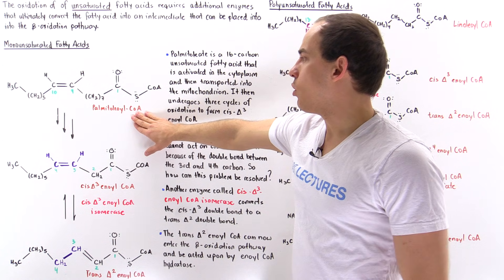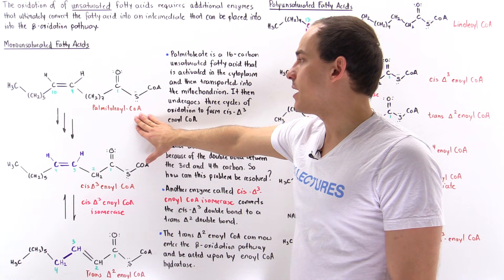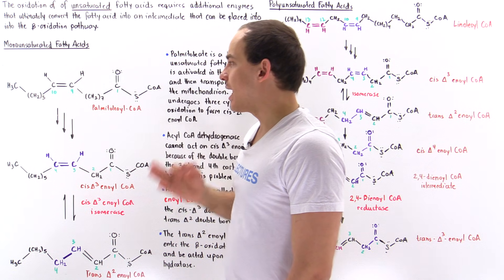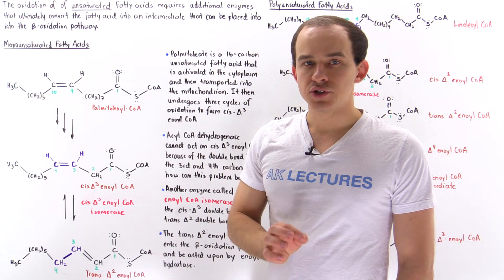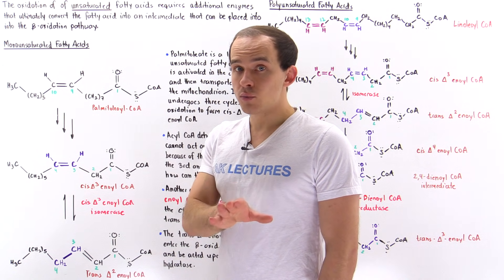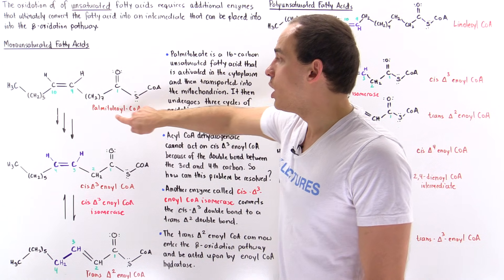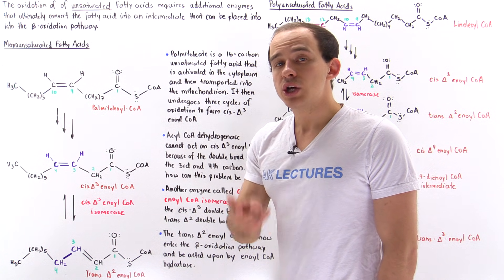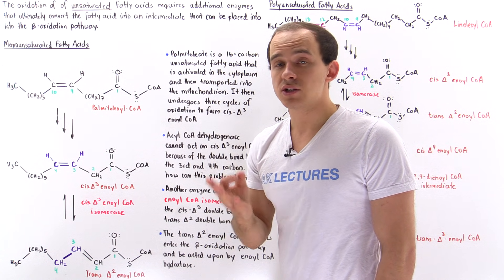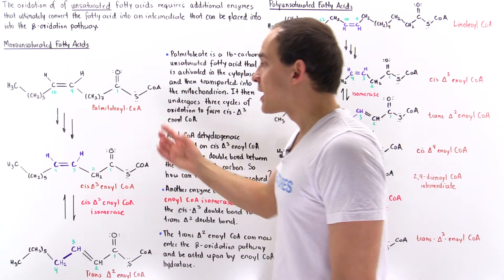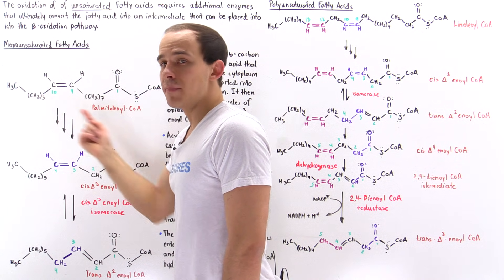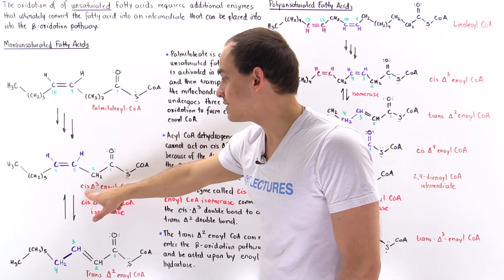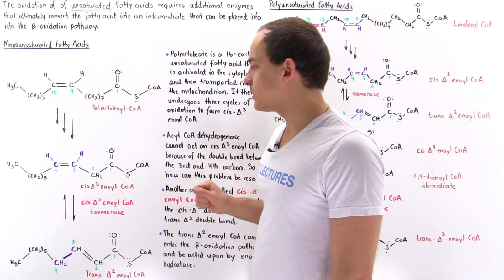Once the palmitoyl-coenzyme A is in the matrix of the mitochondrion, it undergoes three cycles of beta-oxidation — the same beta-oxidation pathway discussed in the previous lecture. After three cycles of beta-oxidation, it produces three acetyl-coenzyme A molecules and shortens this 16-carbon molecule into a 10-carbon molecule: a cis-delta-3-enoyl-coenzyme A molecule.